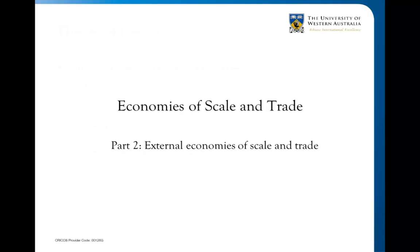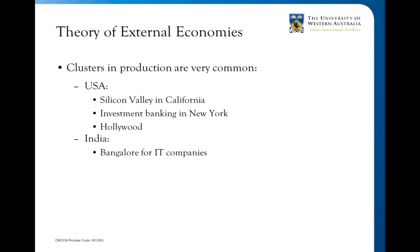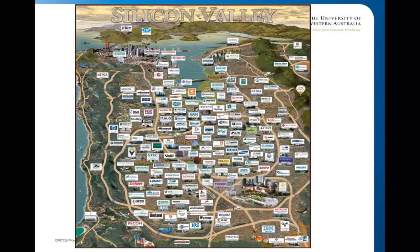In terms of these economies of scale, one way to think about this is in terms of clusters. Clusters in production are really common — there's a whole wealth of literature on this. Some simple examples we're all aware of: Silicon Valley in California, New York in terms of finance, Hollywood, Bollywood, and Bangalore with its disproportionate number of IT companies. There are lots of geographical areas where a particular industry or good is disproportionately produced. Here's a quick map of Silicon Valley.